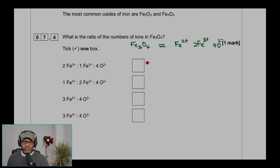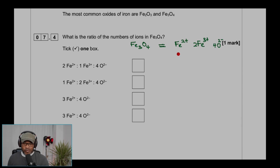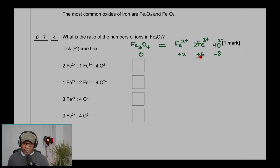For Fe₃O₄, we can write it as Fe²⁺ + Fe³⁺ + O²⁻. There are 4 oxygens giving 4 × (−2) = −8. To balance, try 2 × (+3) = +6 and 1 × (+2) = +2, giving +6 + 2 = +8. Then +8 − 8 = 0, so the overall oxidation state is zero — this works.